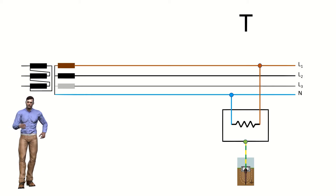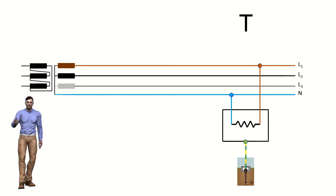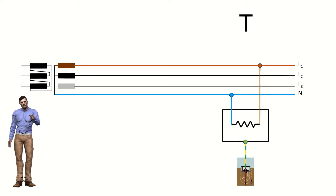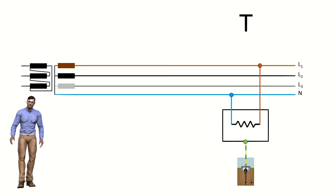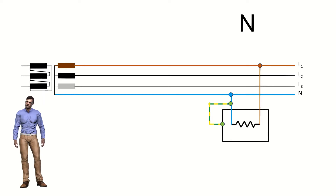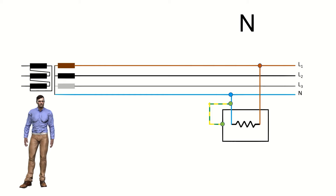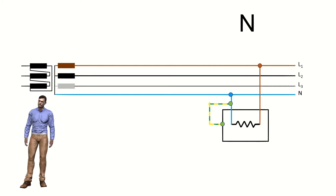For the second letter, which indicates the type of connection in relation to ground of the masses of the customer's loads, that is, their metal enclosures, we use the letter T if these are connected directly to a ground independent of the one of the distribution system. The second letter can also take the value N, in case the masses of the loads are connected directly to the grounded point of the transformer, which for a three-phase installation is normally the neutral.